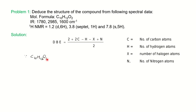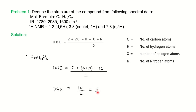For oxygen in the molecular formula, we don't include it in the DBE calculation. Since our formula has only carbon, hydrogen, and oxygen, we ignore X and N. So: DBE = (2 + 2×10 − 12) / 2 = 5. This means there are 5 degrees of unsaturation present in the molecule — these may be double bonds, ring equivalents, or triple bonds (one triple bond equals 2 DBE). We'll determine which based on the spectral data.